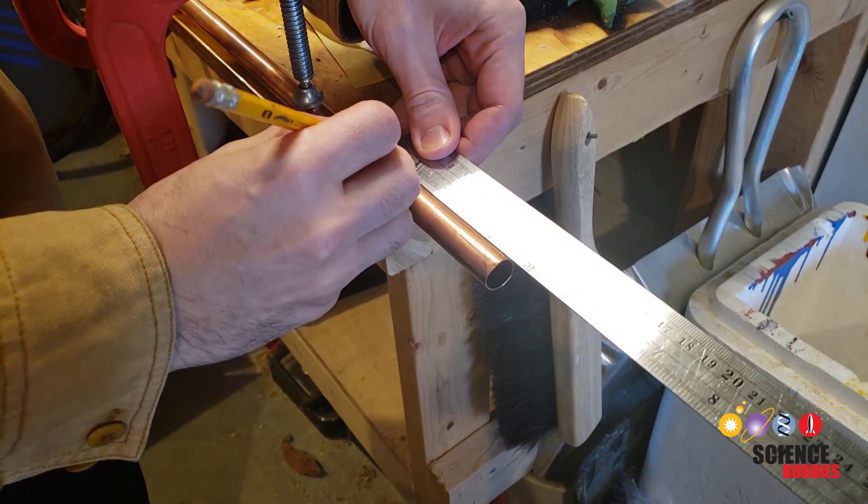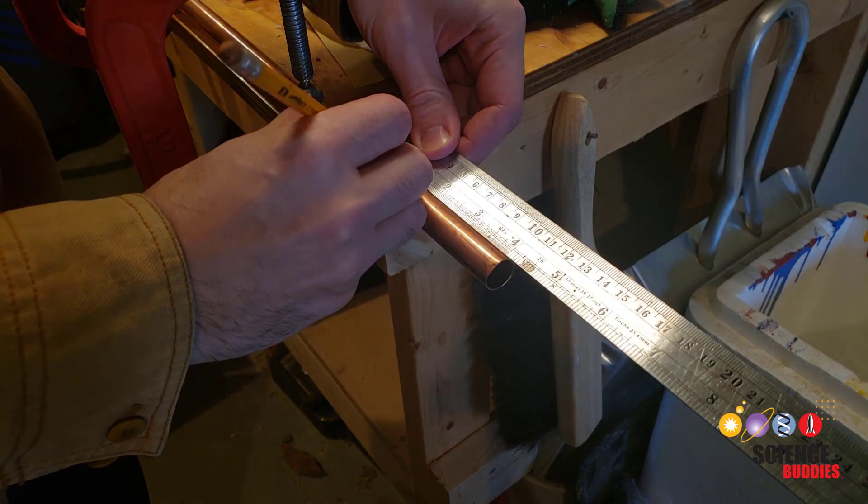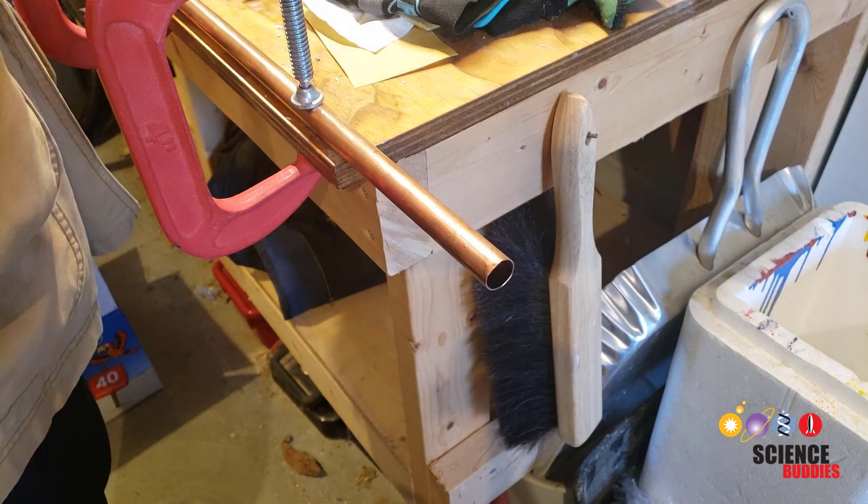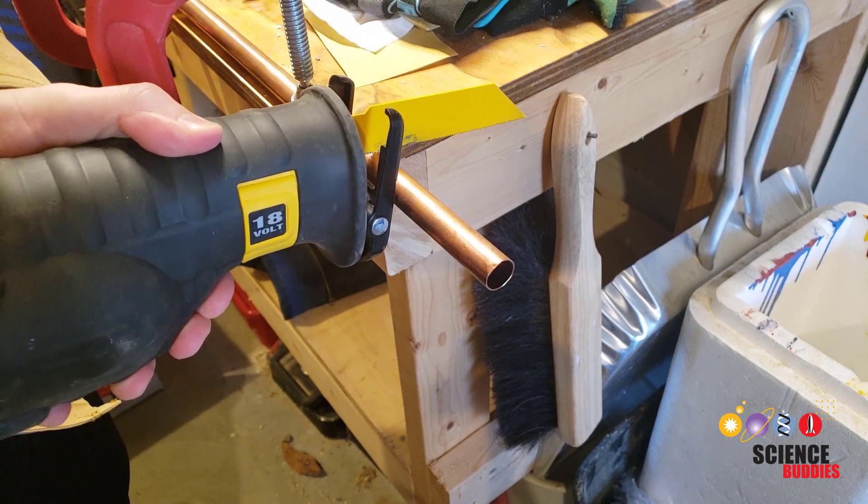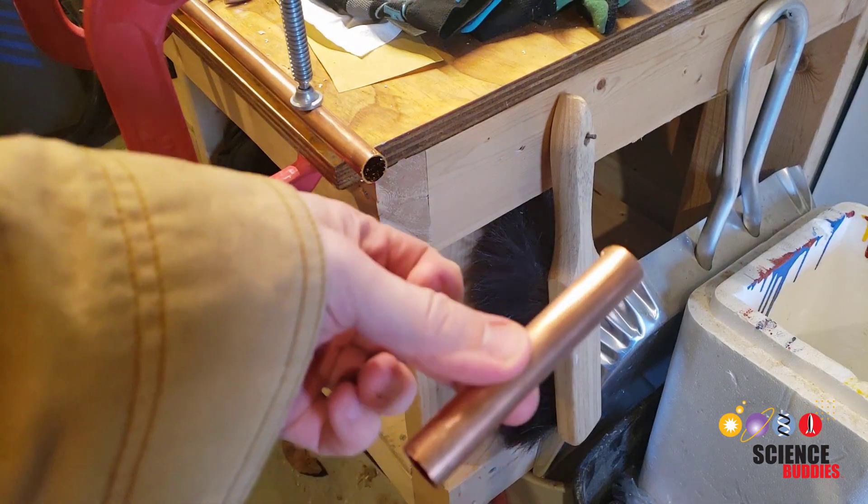First, you will need a piece of copper pipe. The exact size is not critical, but something about a half inch in diameter and four inches long works well. Use a hacksaw or reciprocating saw to cut the pipe to length. And don't forget your safety glasses.